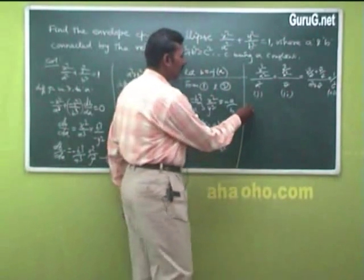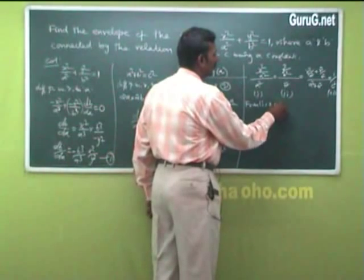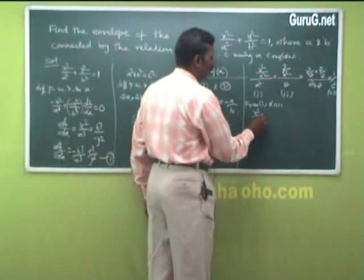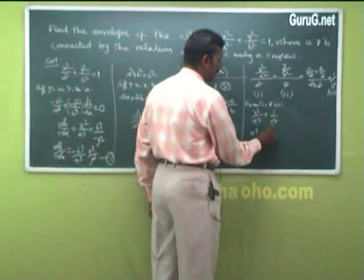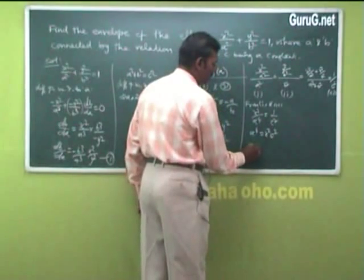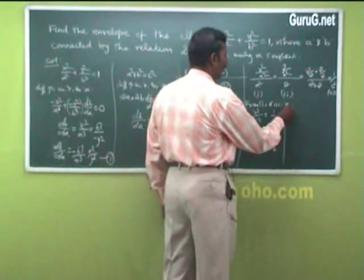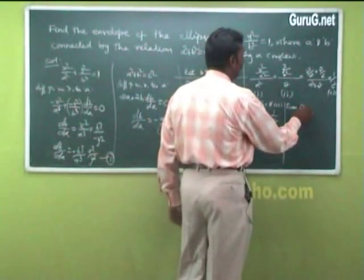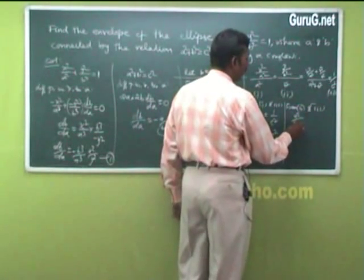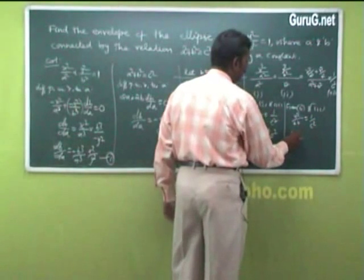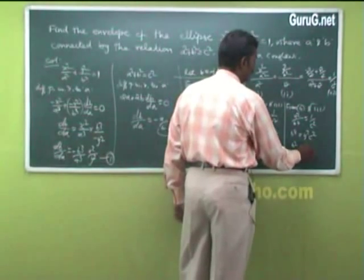From equations 1 and 3: x²/a⁴ = 1/c², so a⁴ = x²c², giving a² = ±xc. From equations 2 and 3: y²/b⁴ = 1/c², so b⁴ = y²c², giving b² = ±yc.